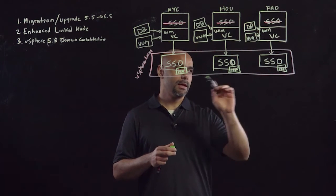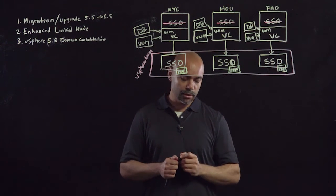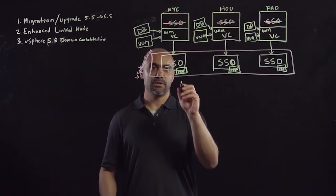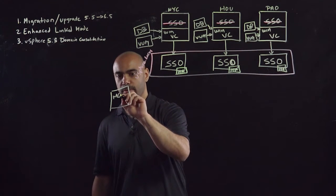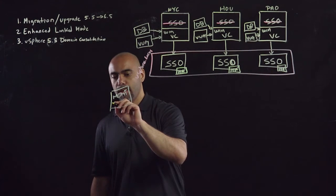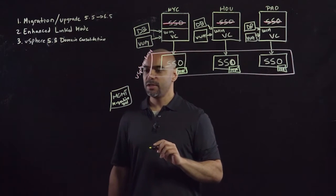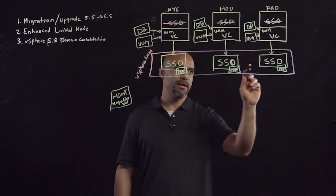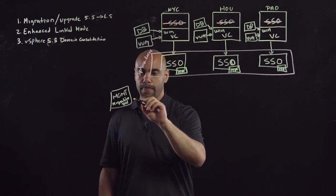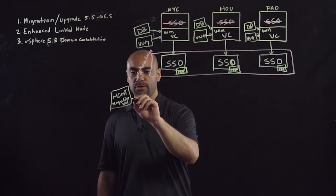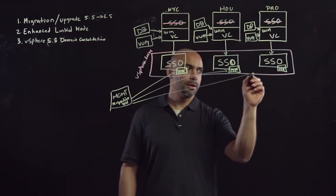So now that we've ran the migration assistant on our SSO boxes, everything met the criteria. The next thing that we're going to do is we are going to deploy a management server. We're just going to write management. That's going to run the migration tool. Now this management server just needs to have a routable network to communicate with my SSO servers and my Windows vCenter servers. So what's going to happen is I'm now going to run the migration tool here. It's going to go out and it's going to talk to each of these migration assistants.